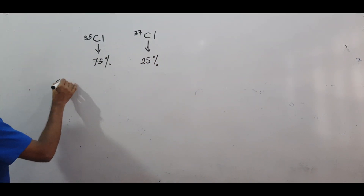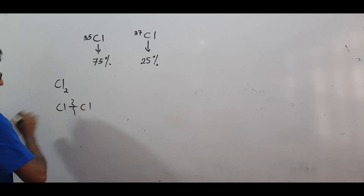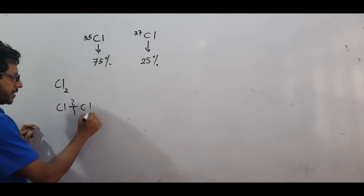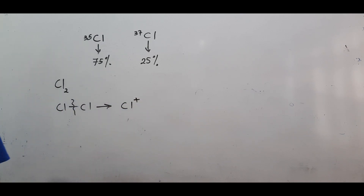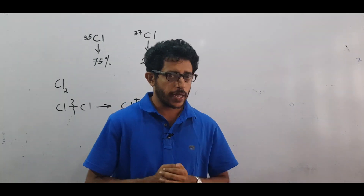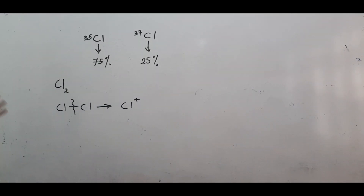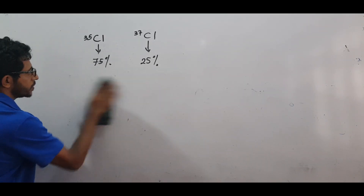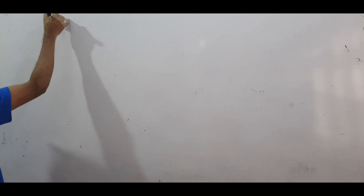Chlorine exists as Cl2. The Cl-Cl bond can be broken when it is bombarded with high energy electrons, so we can have Cl2 and once this breaks, you can have Cl+. There are several possibilities. We call them fragmentation ions. What I am going to draw first are the possible fragmentation ions you can get in the mass spectrum of chlorine. Assuming chlorine has two isotopes — chlorine-35 and chlorine-37 — chlorine can form Cl+ ions as well as Cl2+ ions. The Cl2+ ions we call the molecular ion peaks.